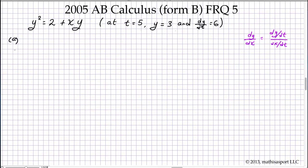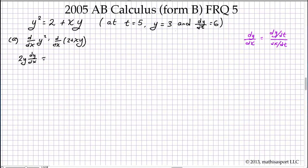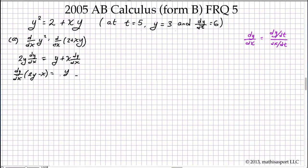For part A, we simply need to find dy/dx using implicit differentiation. We take the derivative of both sides of the equation. This gives us 2y·(dy/dx) using the chain rule. The derivative of the 2 is 0, so we use the product rule and get y plus x·(dy/dx). We then gather all the dy/dx terms together and solve for dy/dx by dividing both sides by 2y minus x.